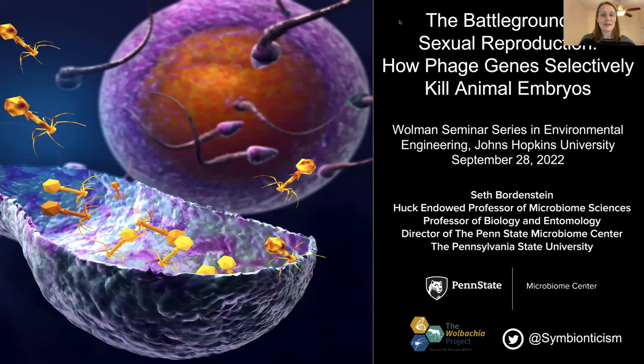He also focuses on applications of his work to controlling insect vectors that carry diseases like malaria, which affects human health and health disparities. He won a number of awards, including the Excellence in Education Award from the Genetics Society of America. He is the director of an HHMI Initiative Science Education Program, Discover the Microbes Within the Wolbachia Project, and recently a fellow of the American Academy of Microbiology. Today we'll be talking about the battleground of sexual reproduction, how phage genes selectively kill animal embryos. So thank you again, Seth, for joining us.